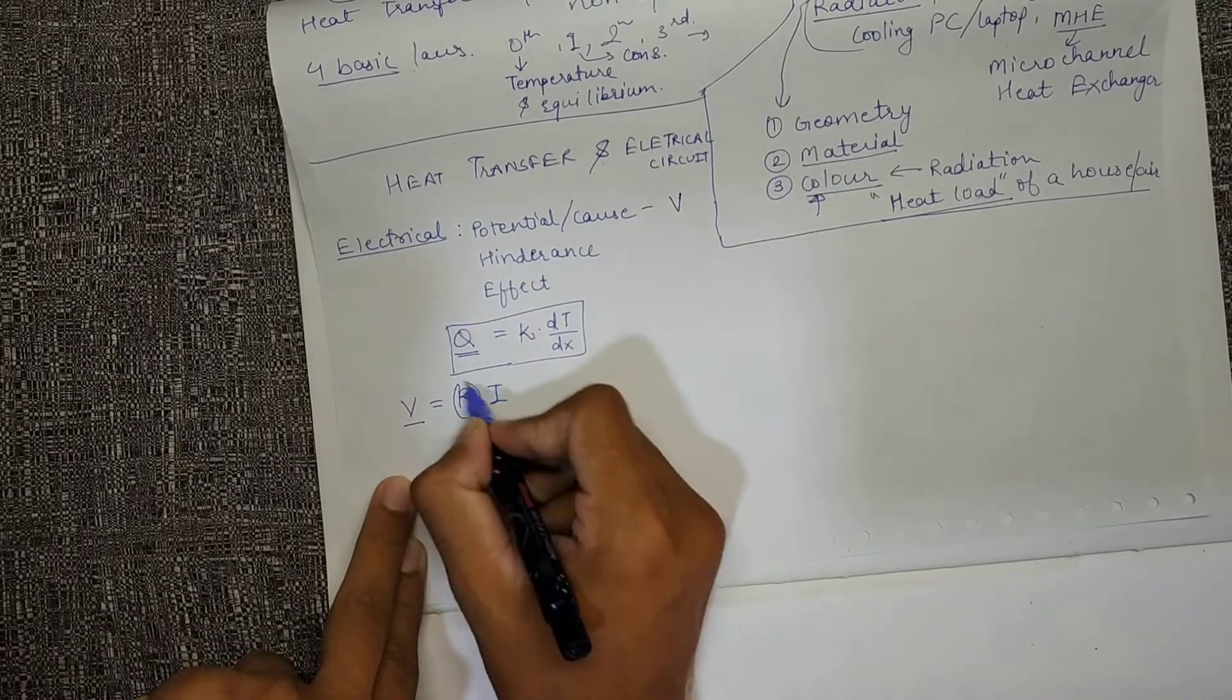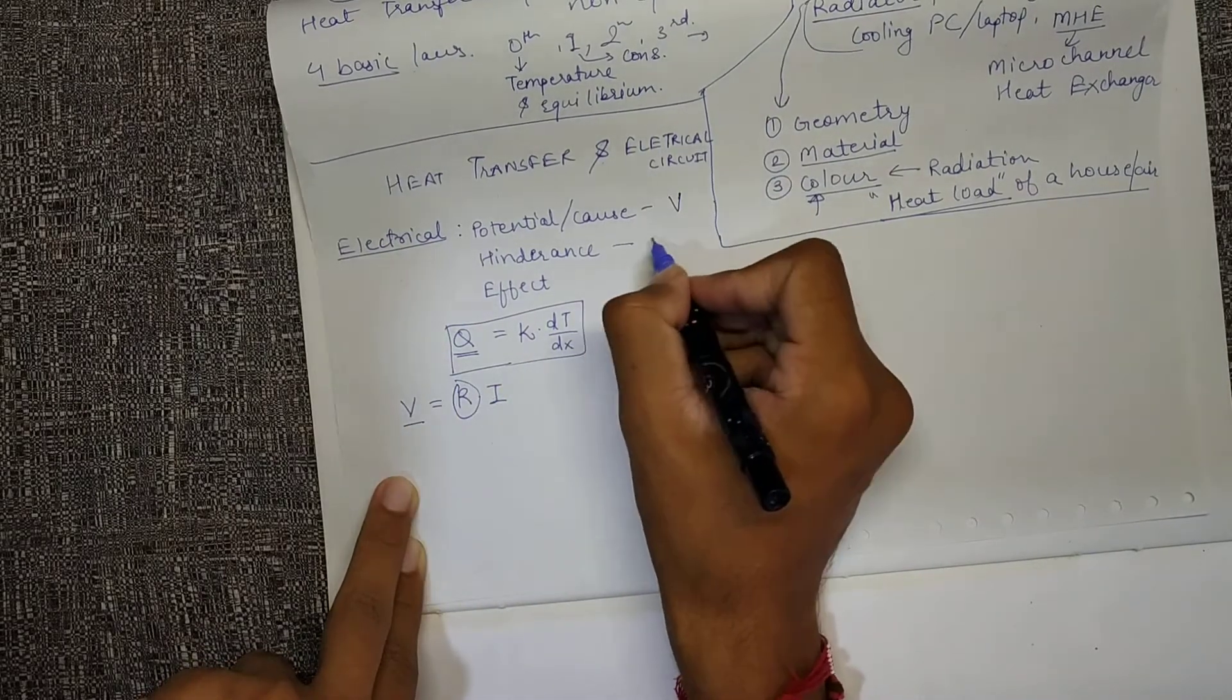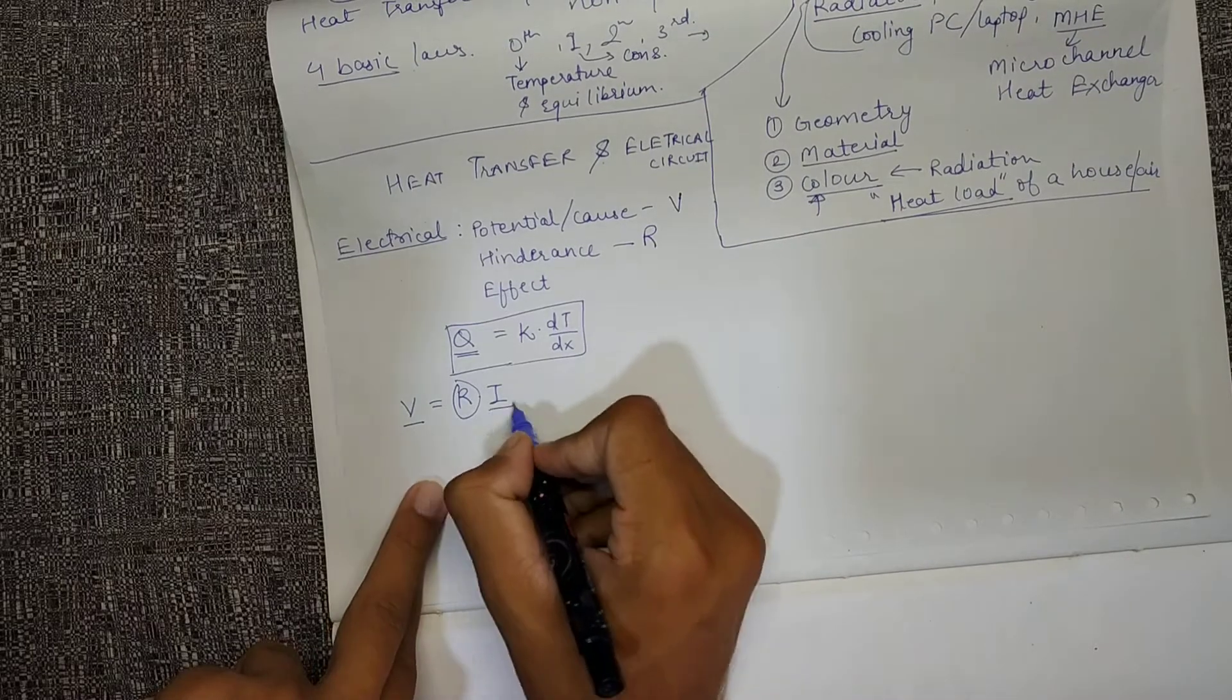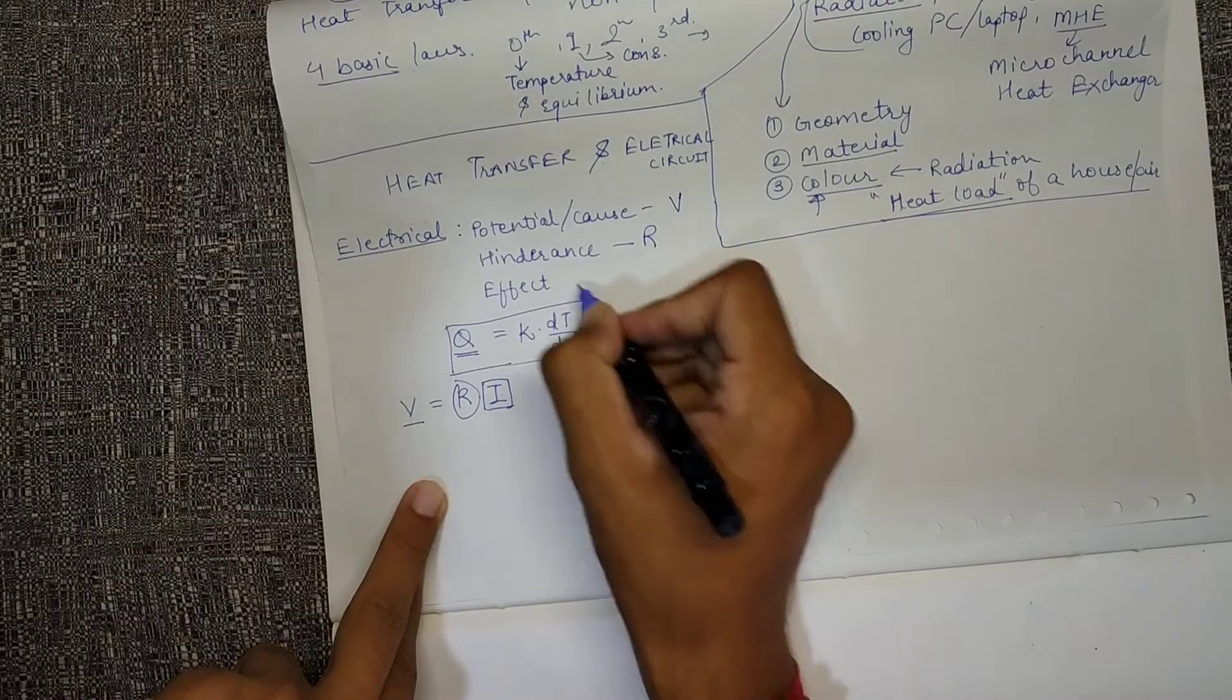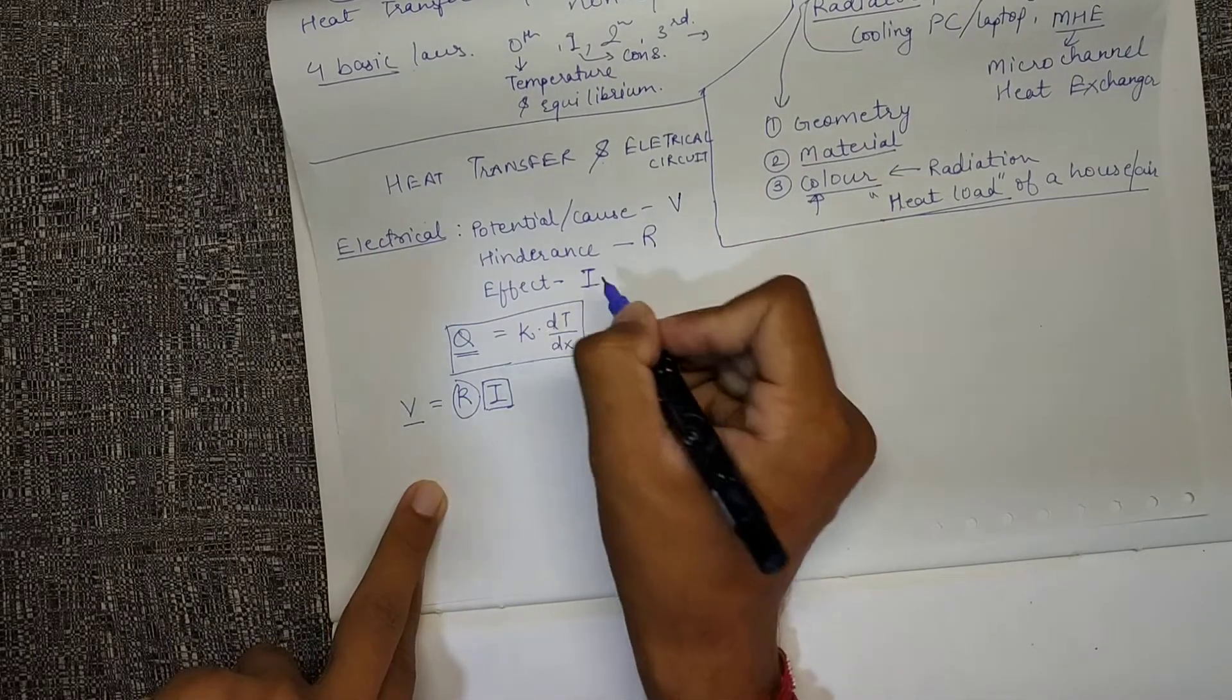The hindrance was provided by that resistance, and the effect was the movement of electrons, that is current.